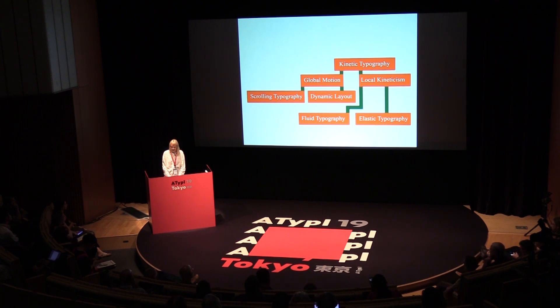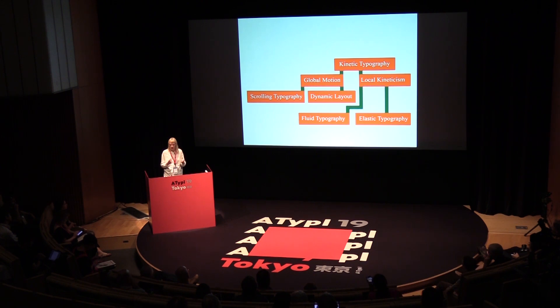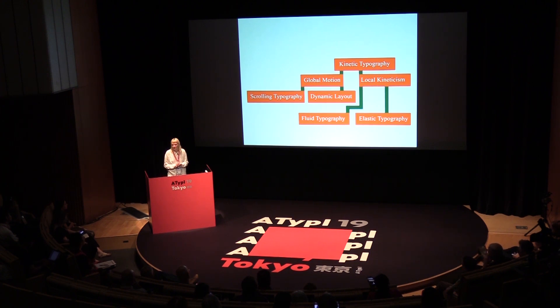Barbara Brownie divided kinetic typography into global motion and local kineticism. This is a very important step in the taxonomy, as you need to identify where the movement is actually happening — whether it is global or more localized. Global motion is divided into scrolling typography, with subcategories of scrolling horizontal, scrolling vertical, and scrolling 3D effect. Dynamic layout is identified as a composition that rearranges so that the distance between words or letters changes.